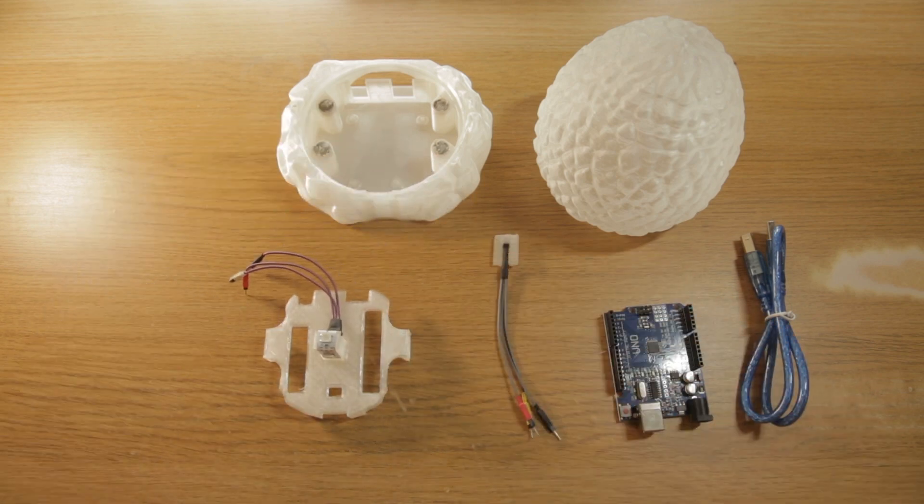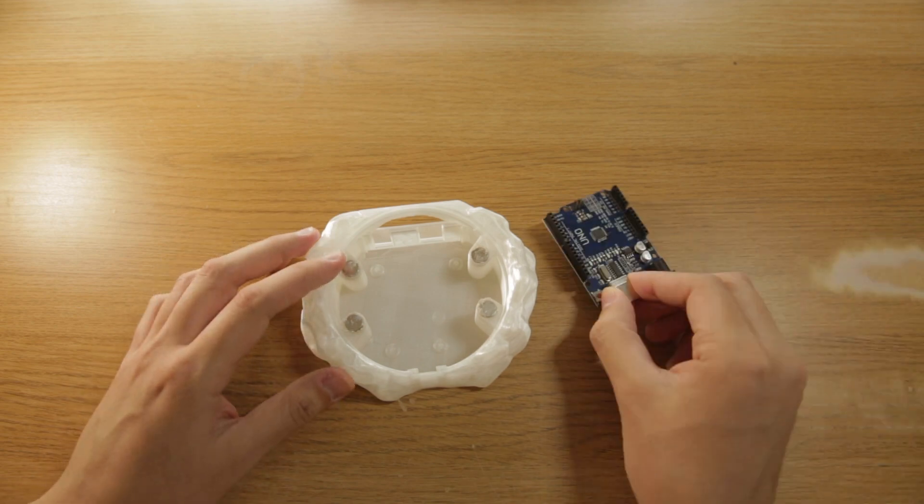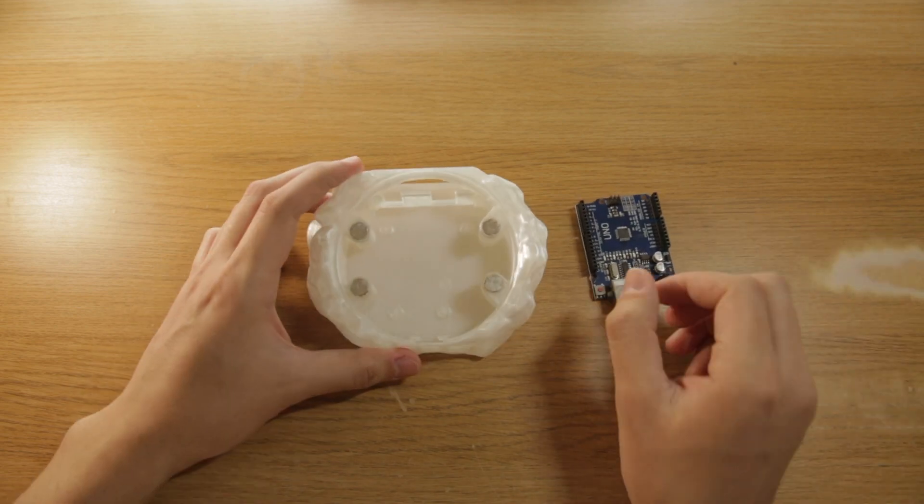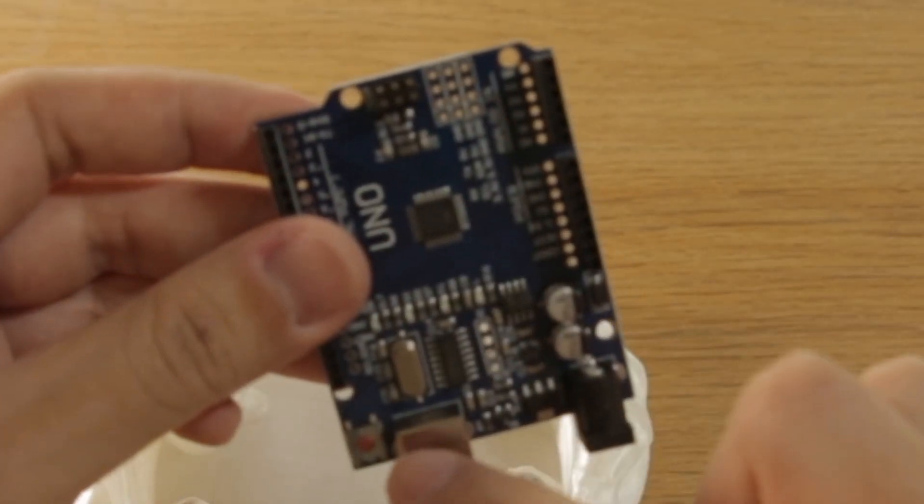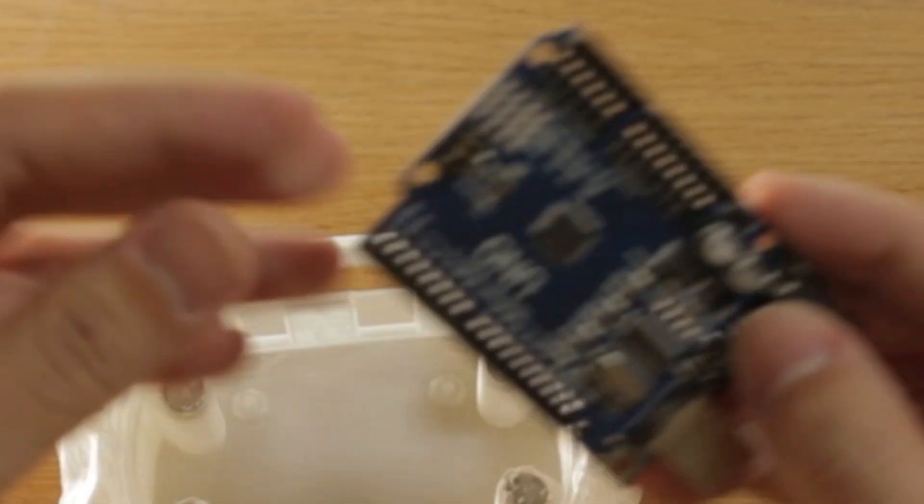The first step in the process is going to be fitting the microcontroller inside the base. Note the four mounting posts here and the four mounting holes on each corner of the controller.